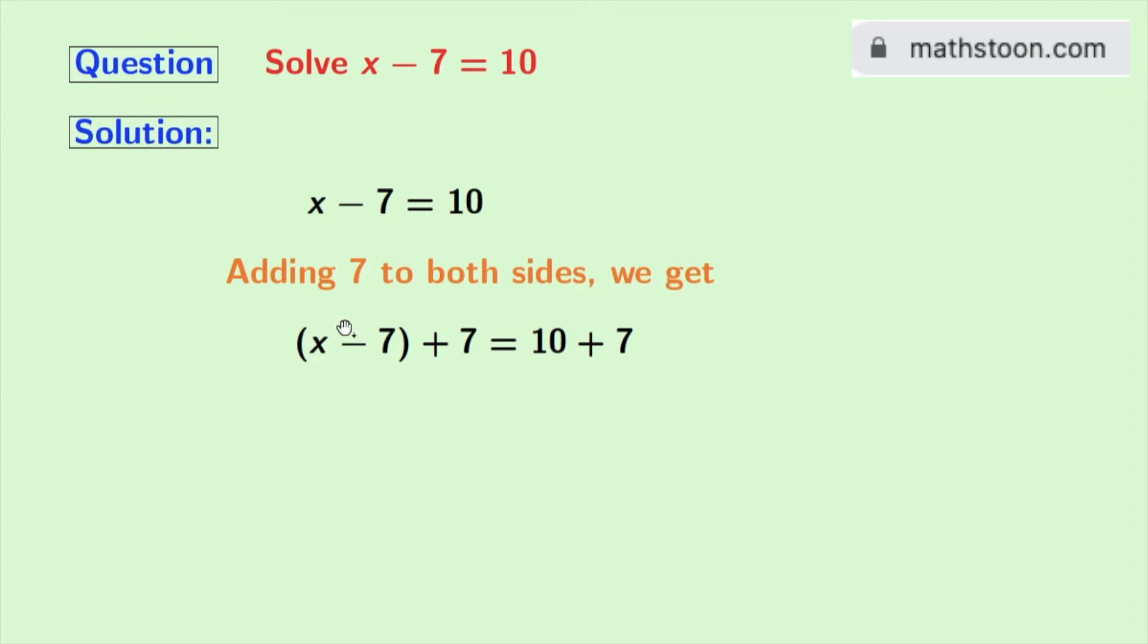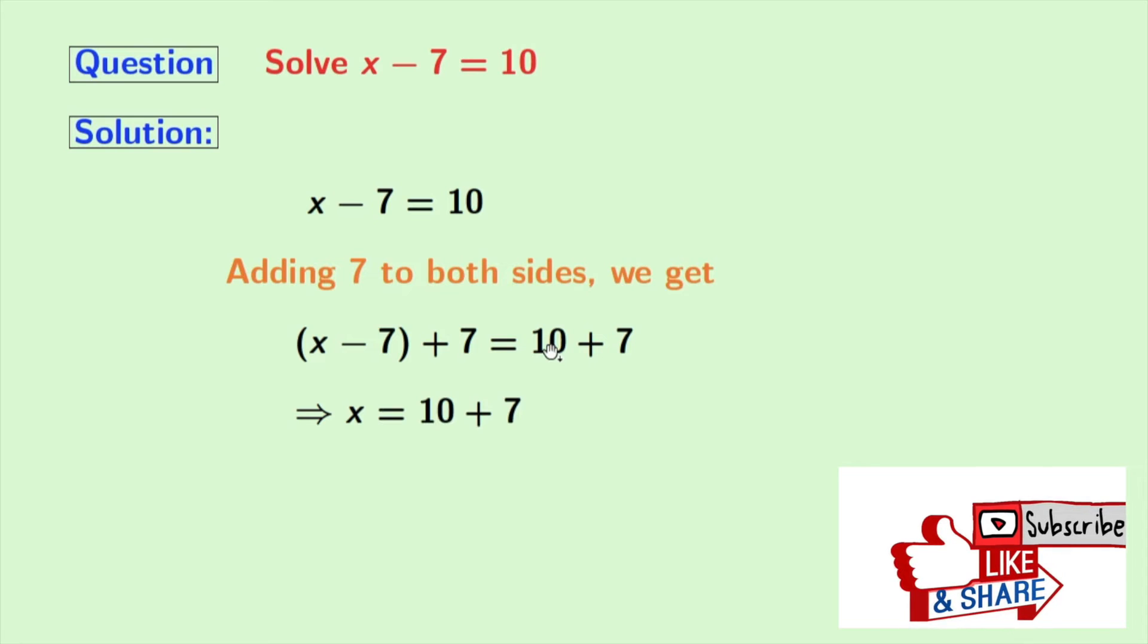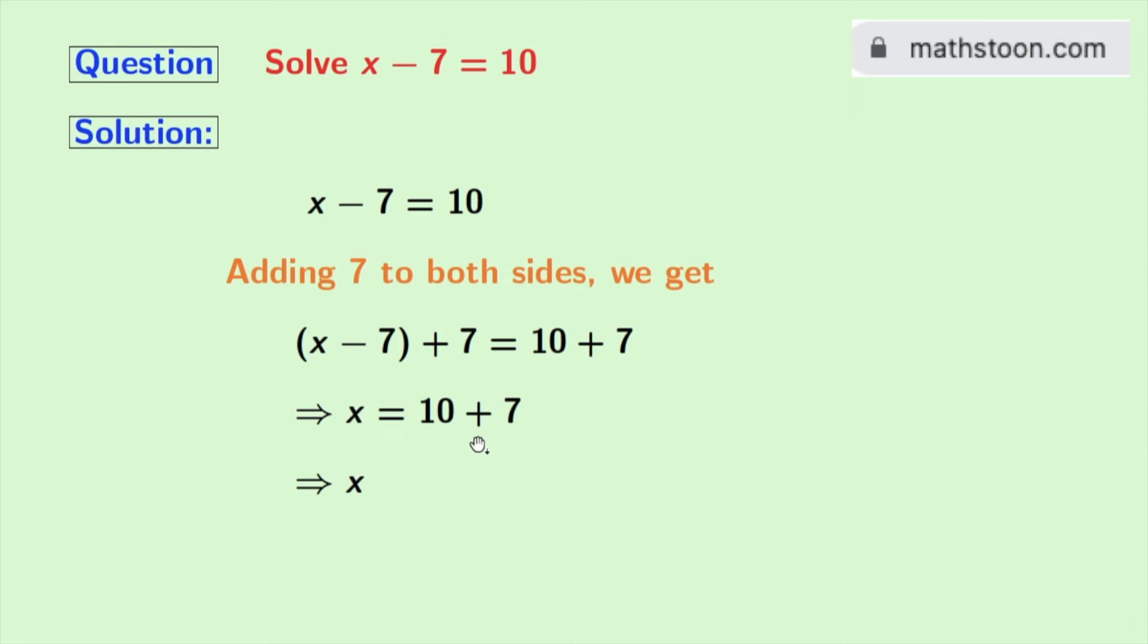Solving the left-hand side, we will get x, as minus 7 and plus 7 is equal to 0. And in the right-hand side, 10 plus 7 remains the same. As 10 plus 7 is equal to 17, we finally get x is equal to 17.